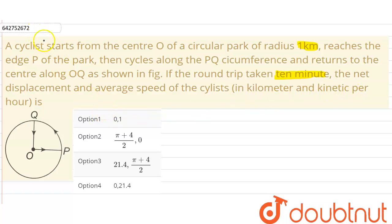Okay, now in the given question, the cyclist starts from point O, goes to point P, cycles from P to Q, and then comes back to O. So the net displacement will be zero as the initial and final position is same.